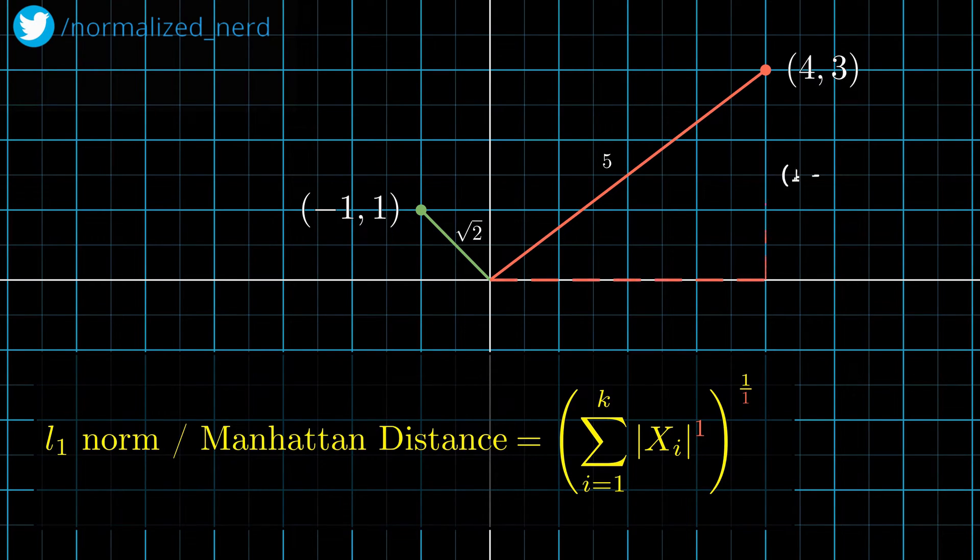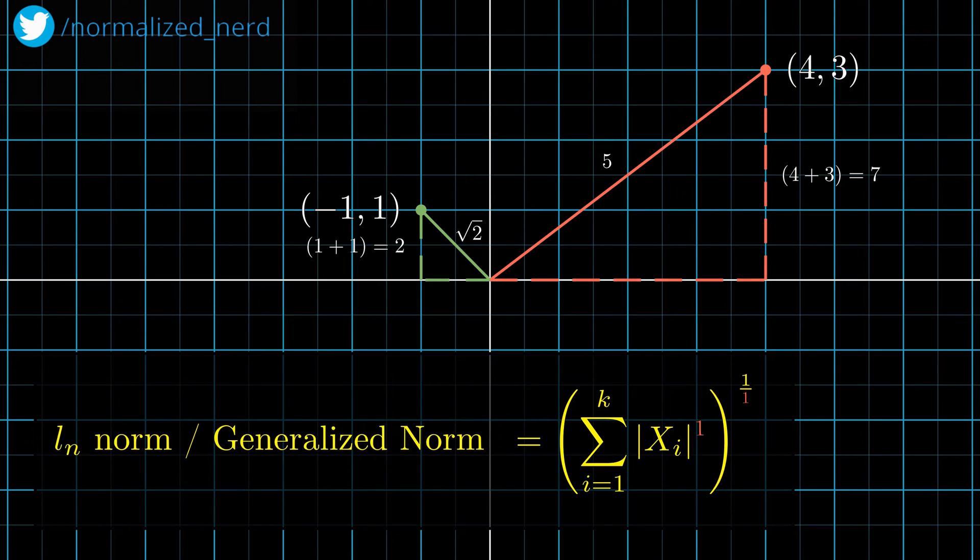Visually, it looks like this. So if we want to generalize, then we can say the Ln norm is the nth root of the summation of all components to their nth powers.